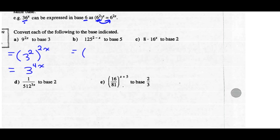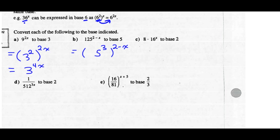For Part B: 125 to the 2 minus x. I want to rewrite that base as a power with a base of 5. Instead of 125, that's going to be 5 cubed. So 5 cubed to the 2 minus x — our rule says keep your base of 5 and multiply the exponents. 3 times 2 minus x is 6 minus 3x. So we've changed the base to 5.